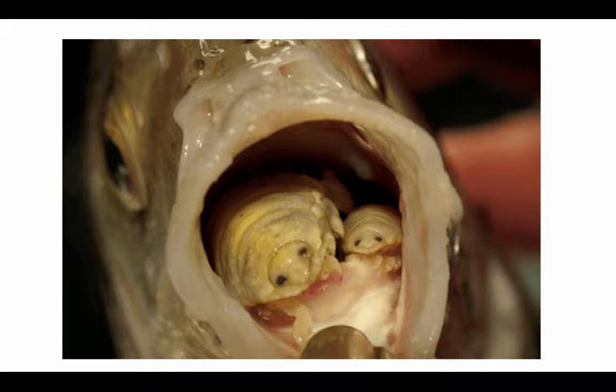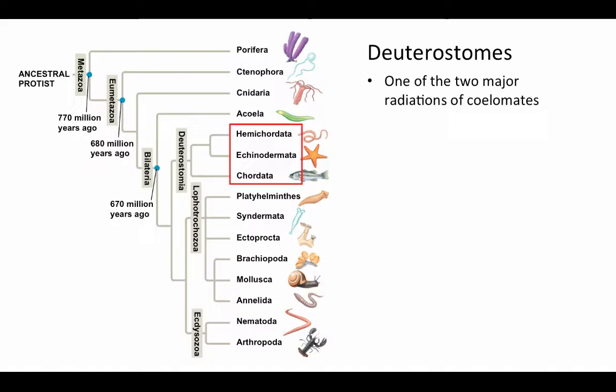Once the tongue falls off, the isopod attaches itself to the blunt end and actually becomes the fish's tongue — both functionally and morphologically. It just lives in the fish's mouth, feeding on the fish's blood, mucus, and any food that passes through. Usually a smaller male attaches to one of the gill bars just behind the female. They live there until the fish dies — it's not really known whether they then find another fish or if that ends their life cycle.